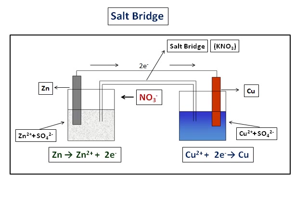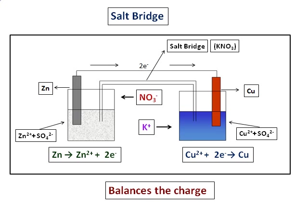So in order to balance the increased negative charge, the potassium ions move towards the cathode. So basically, a salt bridge balances the charge and maintains electrical neutrality in an electrochemical cell. And also, it completes the inner circuit, as you can see from the diagram.